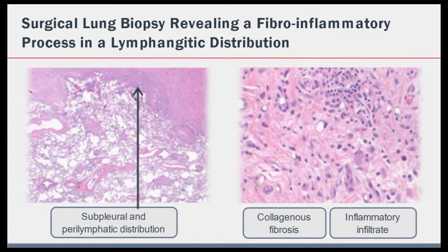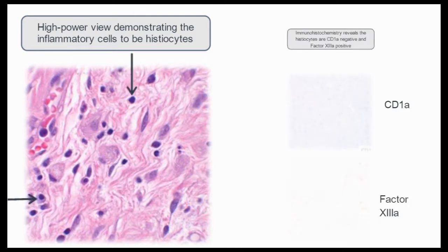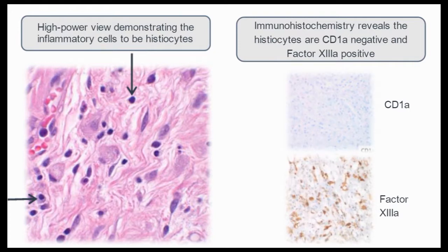Here I have a few slides from her lung biopsy. On the left-hand side, you can see the subpleural and lymphogenic pattern of distribution. On the right-hand side, you can see the collagenous fibrosis and the inflammatory infiltrate. On high power view, the inflammatory cells were found to be histiocytes, and subsequent immunohistochemical staining revealed that these were negative for CD1A and stained positive for factor 13. These findings were consistent with the diagnosis of Erdheim-Chester disease.